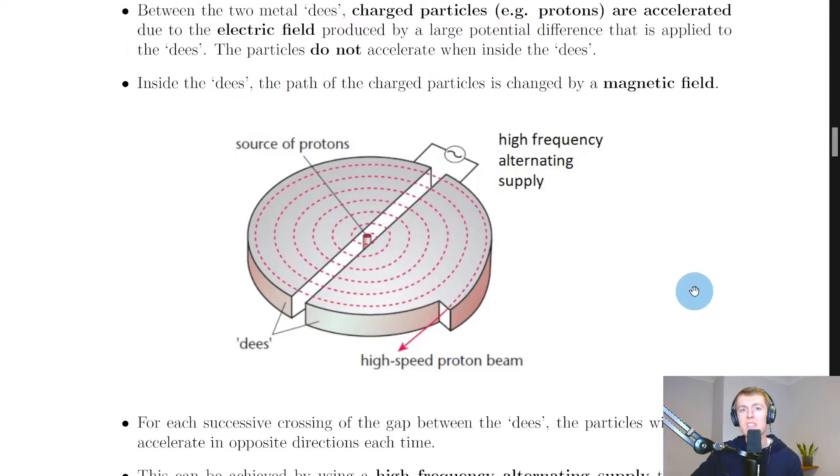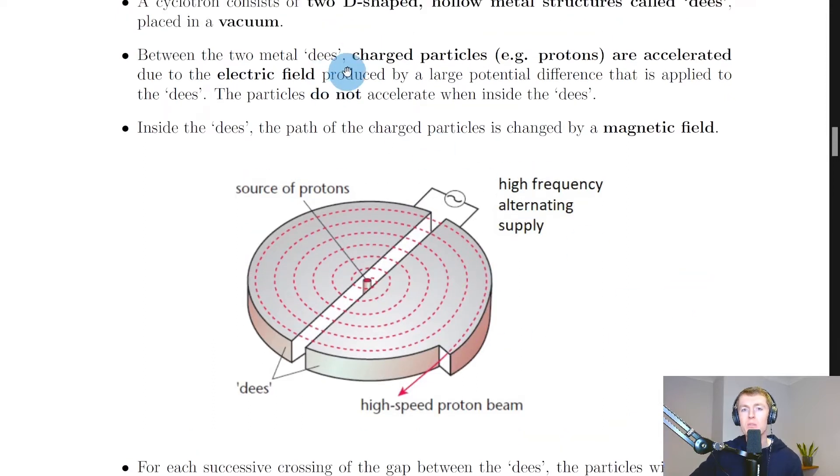So this picture shows you the two dees here, and between the two metal dees, charged particles, for example protons, are accelerated due to the electric field produced by a large potential difference that is applied to the dees. The particles do not accelerate when inside the dees. Just like for the linear accelerator, the particles do not accelerate when they're inside the tubes, the hollow metal tubes, but they do accelerate between the tubes and it's similar here for the dees.